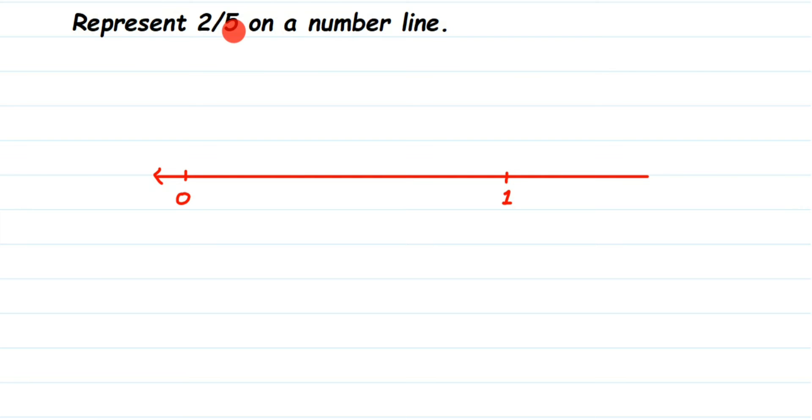So 5 equal parts means you should draw 4 lines here. Just count the equal parts: this is 1, then 2, this is 3, and this is 4 and 5. Don't count the lines, it may confuse you. Just count the equal spaces. It should be 5.